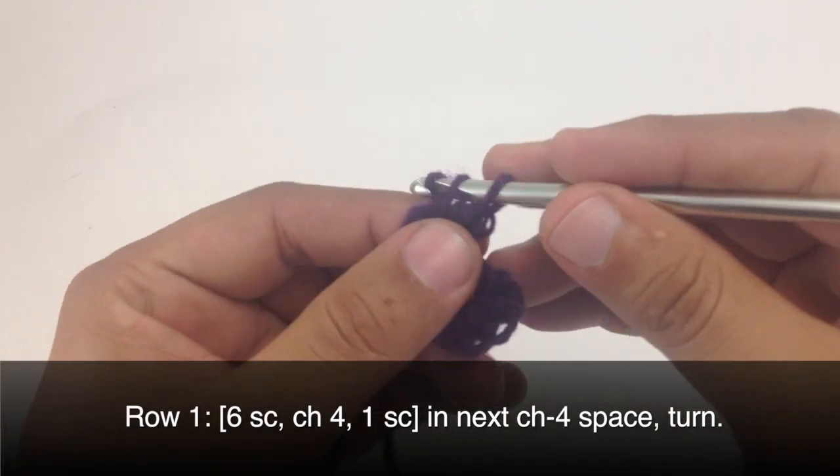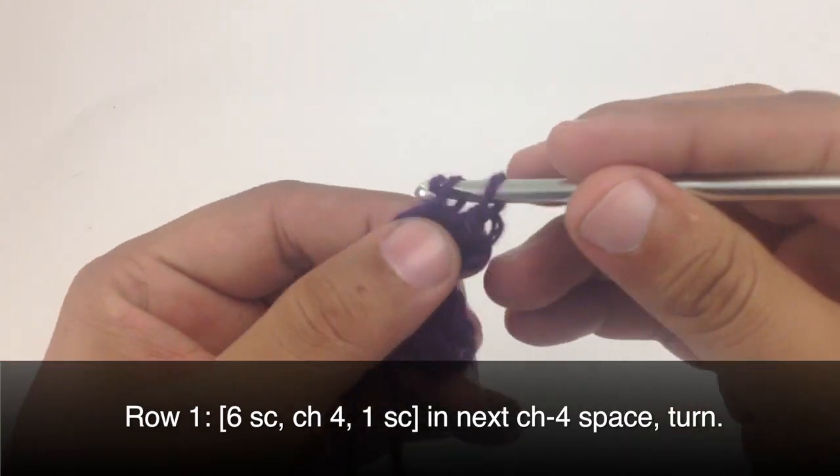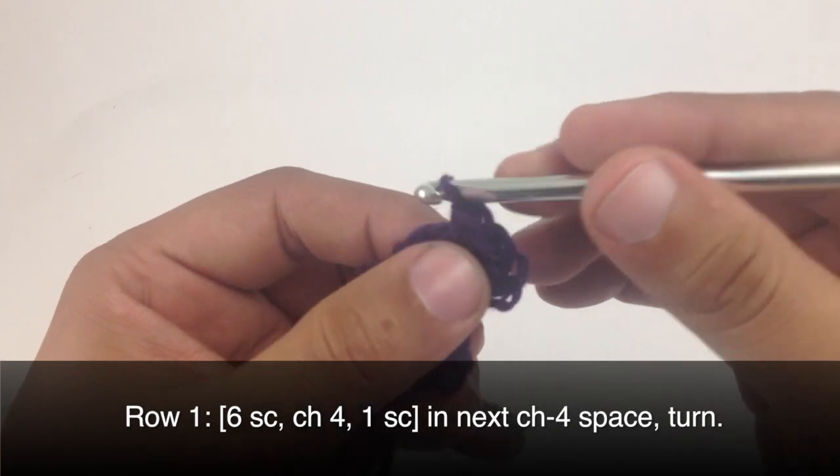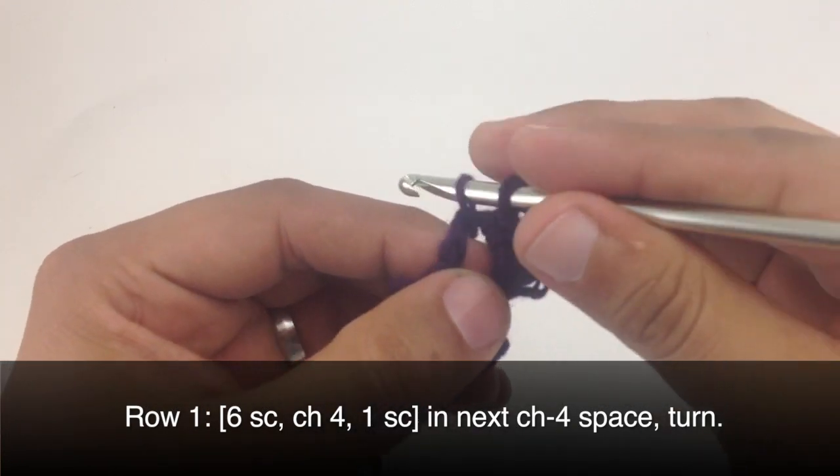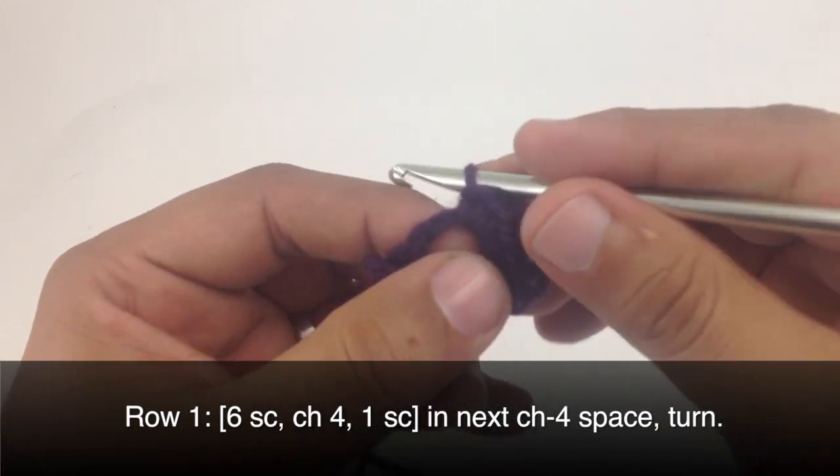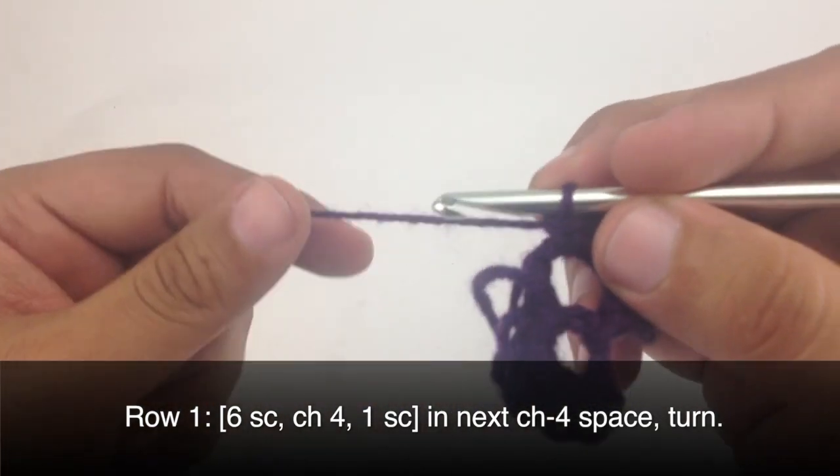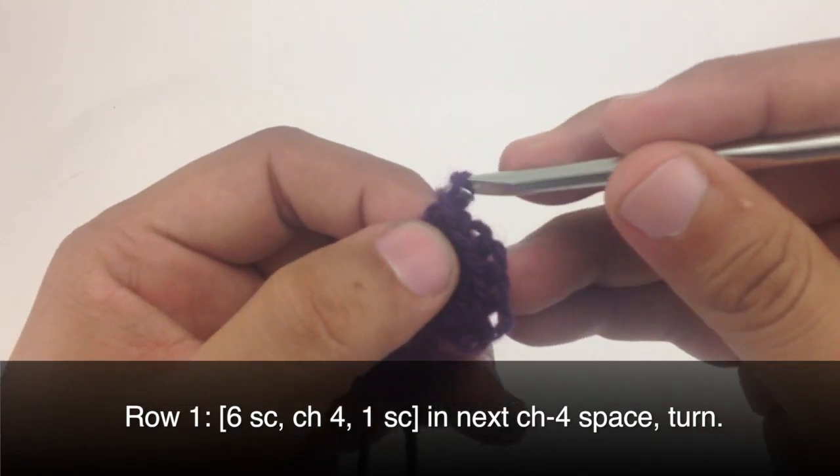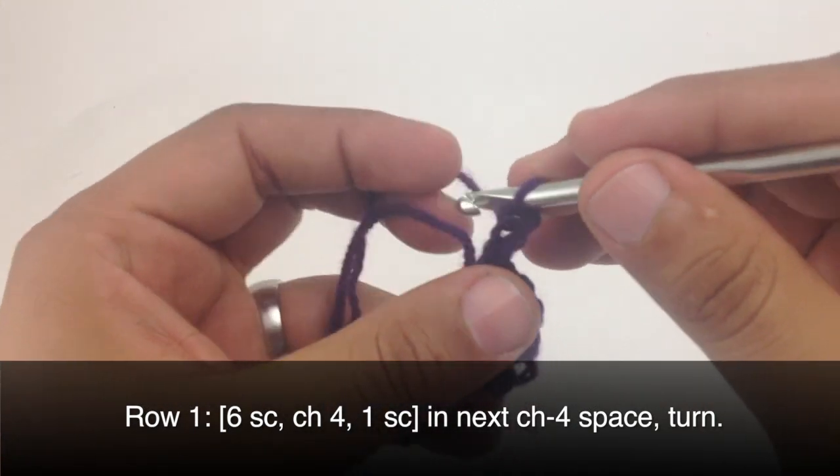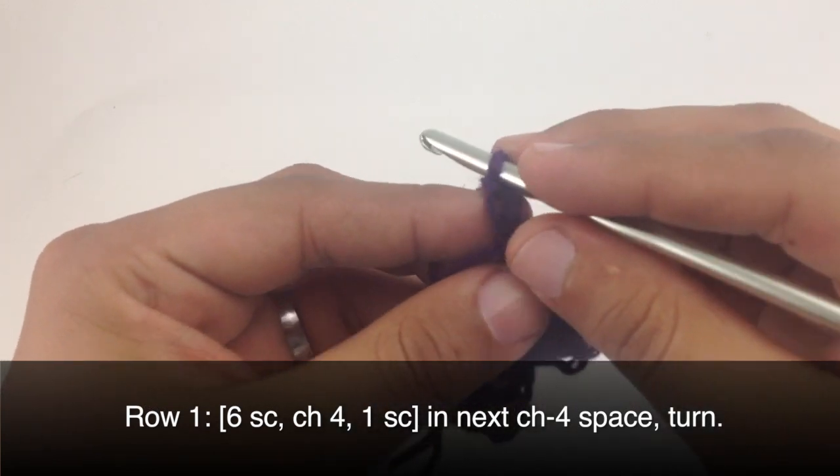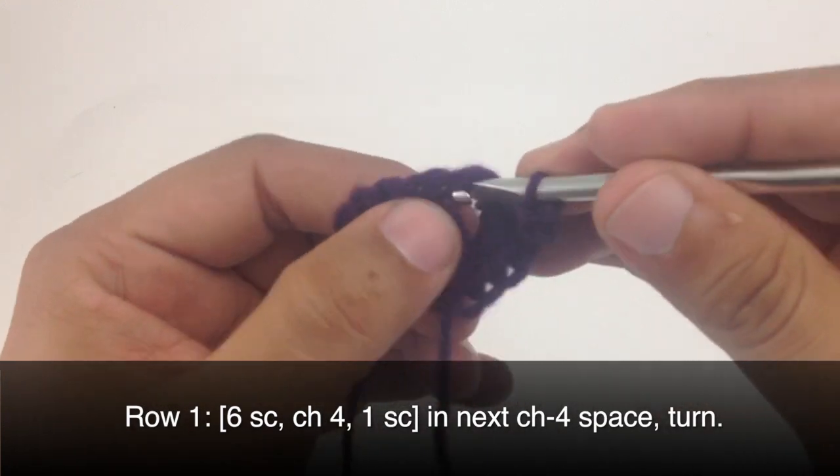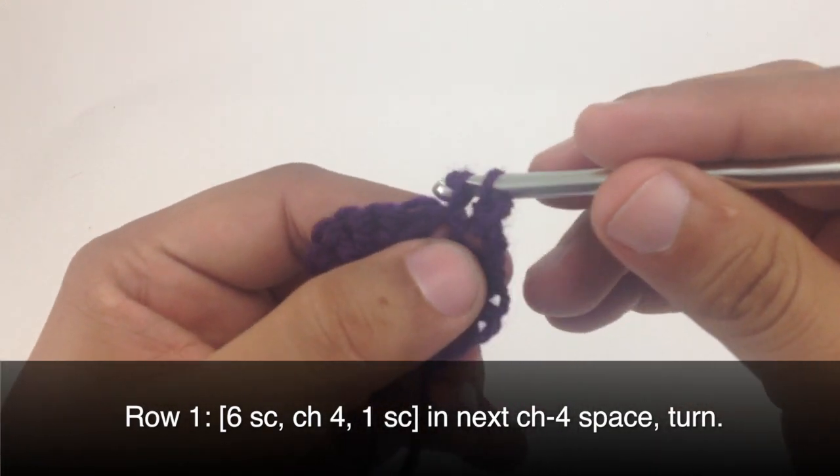So that's 2, 3, 4, 5, and 6. Then we're going to chain 4. 1, 2, 3, 4, and then we will single crochet into that same chain 4 space.